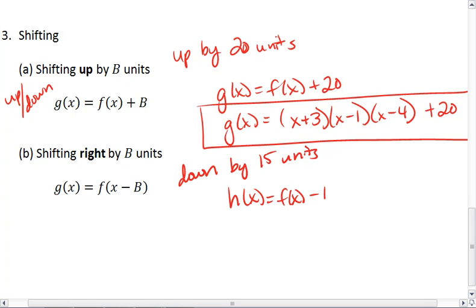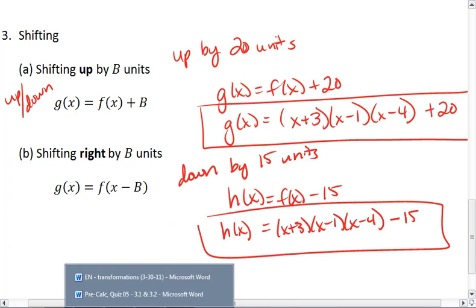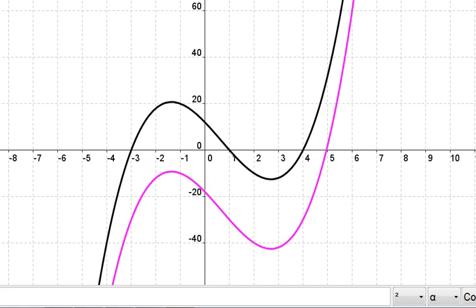Then we take f of x minus 15. We get x plus 3 times x minus 1 times x minus 4, and at the very end, minus 15. And that will give us the pink graph. So here we've shifted the black graph down by 15 units.